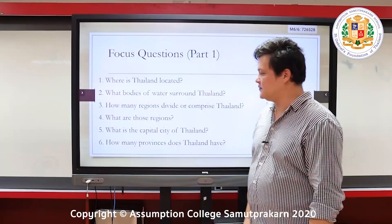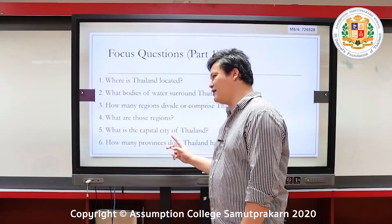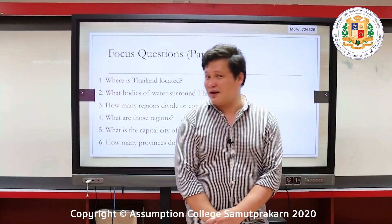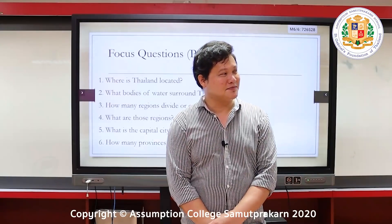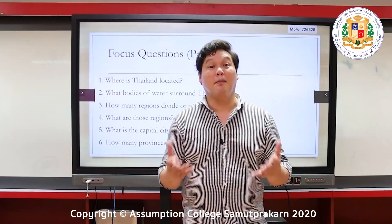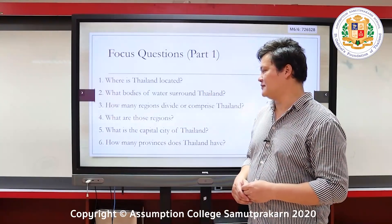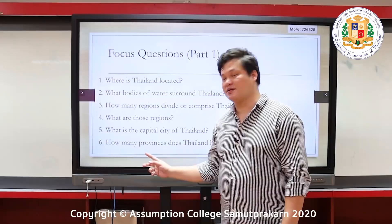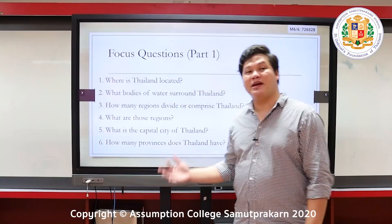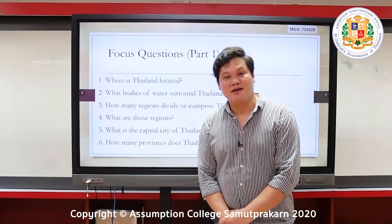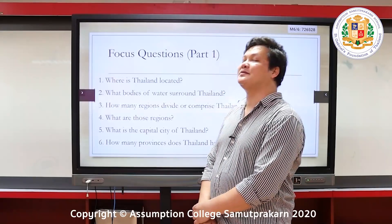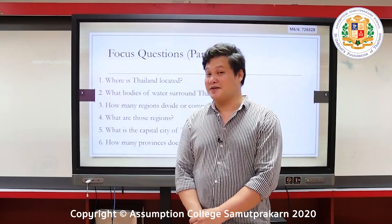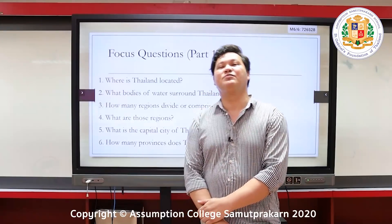Fifth question: what is the capital city of Thailand — is it Samut Prakan, Nakhon Ratchasima, or Phuket? The answer is Bangkok. Sixth question: how many provinces does Thailand have? The answer is 77 provinces.